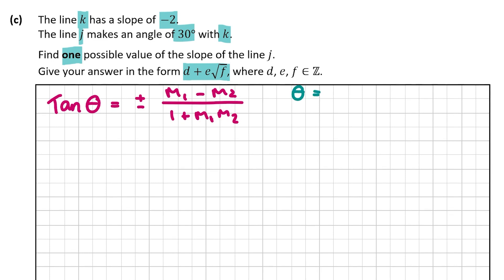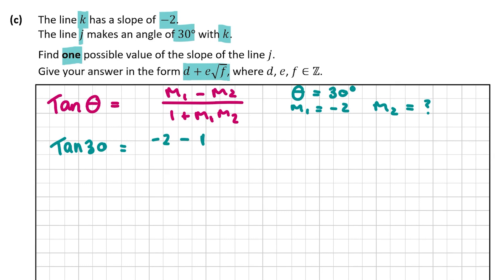We know θ is 30 degrees and M1 is -2; we're looking for M2. Since we only need one possible value, we can drop the ± and use just the positive sign. So: tan(30°) = (-2 - M2) / (1 + (-2)·M2), which simplifies to (-2 - M2) / (1 - 2M2). Now we're going to change tan(30°) into surd form because the answer is required in surd form.